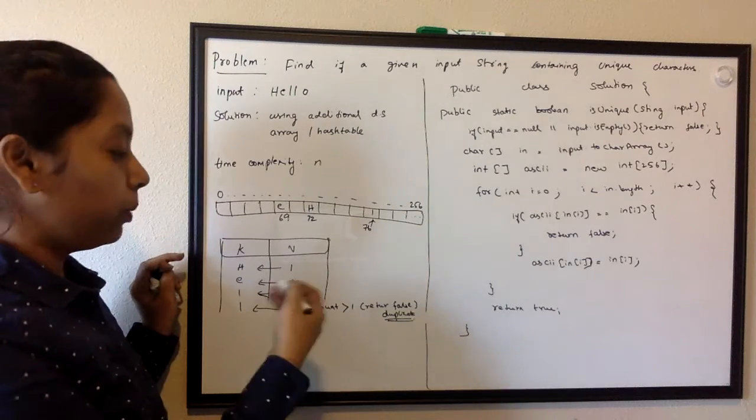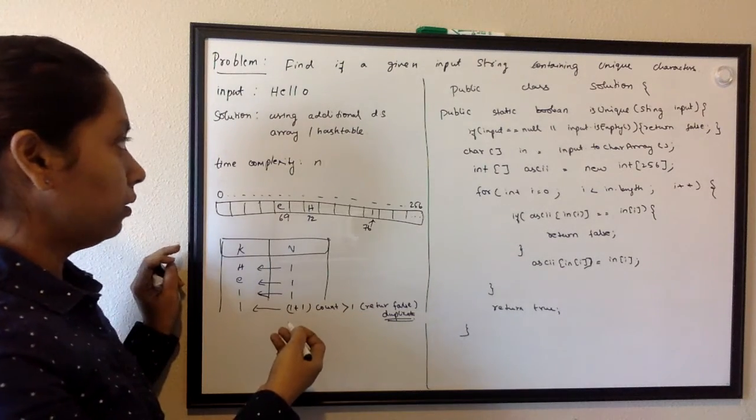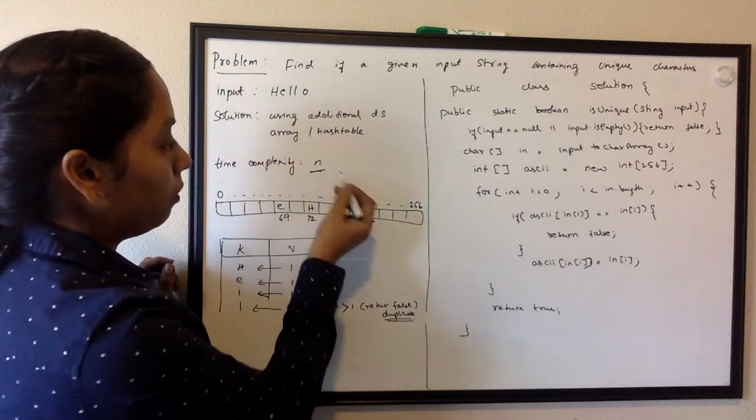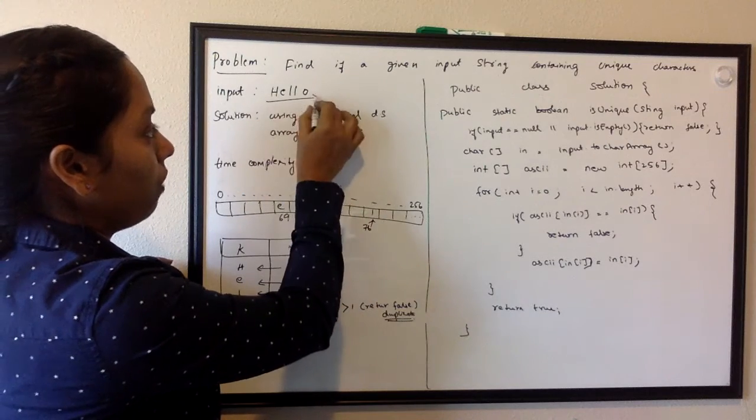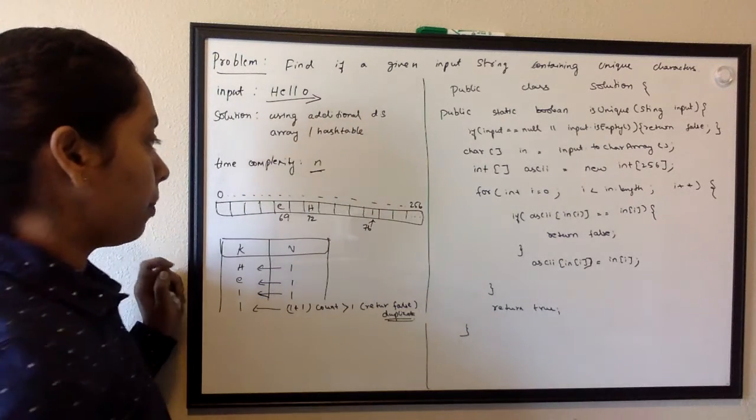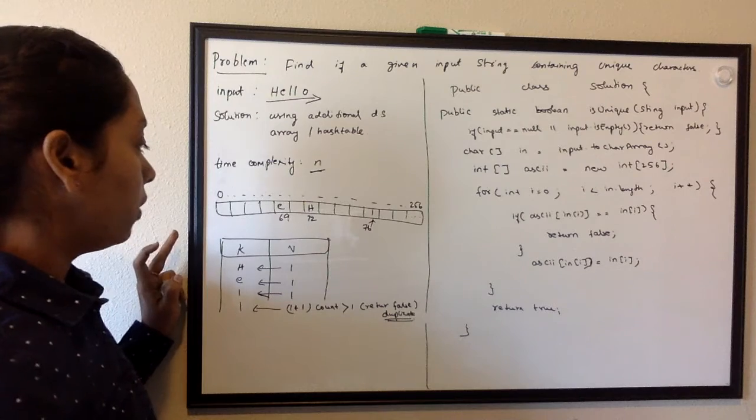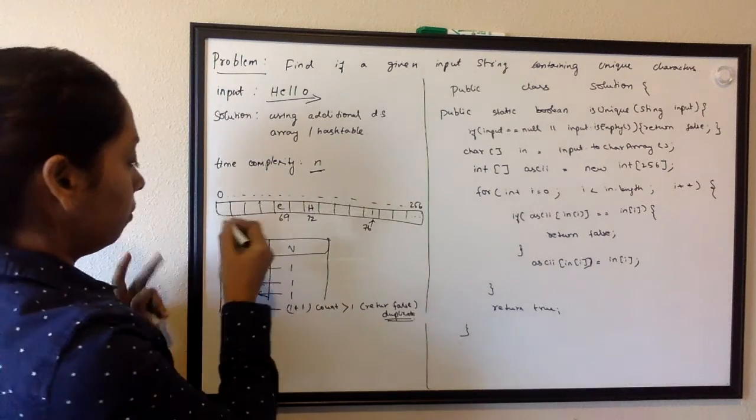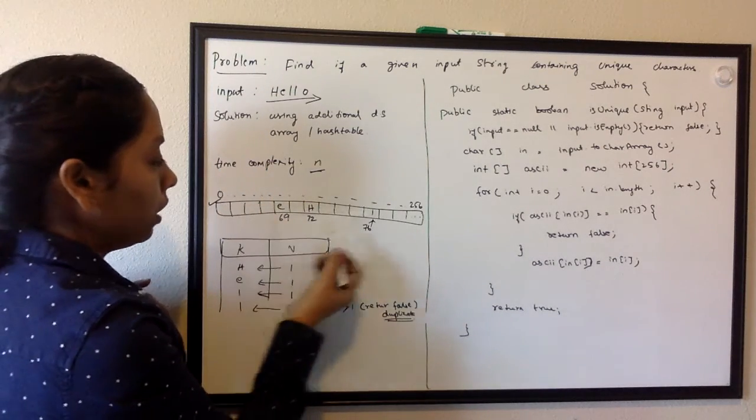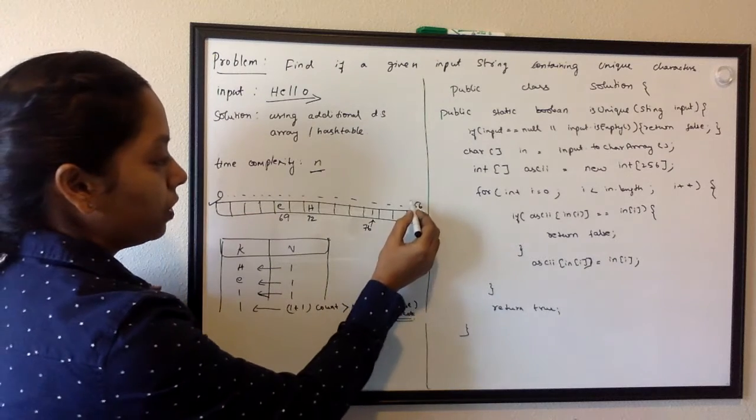How we can do this is use some additional data structure to keep track of the duplicate characters. The time complexity would be O(n) because we are going to traverse one time in linear time. We can do it with an array, 0 to 256.